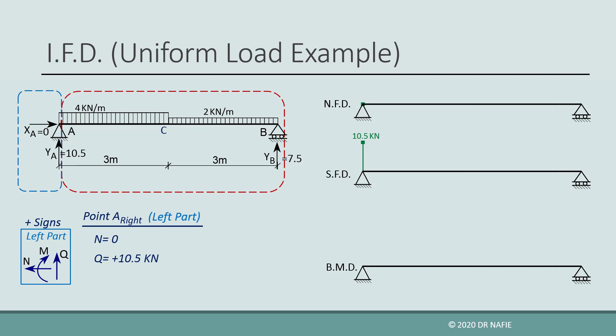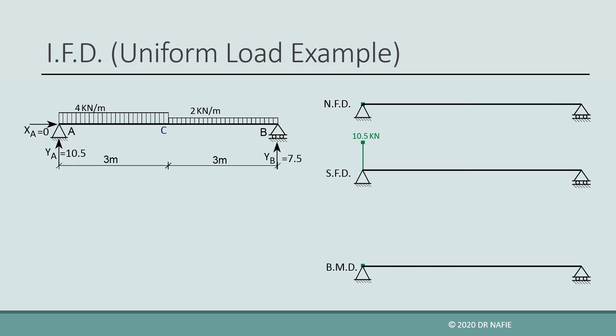To find the value of the internal bending moment, we take the moment of all the forces located in the left part about the considered point, which is point A. The moment about point A will be zero because all the forces in the left part pass through A. Next, we evaluate the internal forces at the next critical point, which will be point C, located at the end of the first uniform load. Because there is no concentrated load at point C, the internal forces just to the left and right of point C will be identical, so we do not need to evaluate the internal forces at the left or right of point C.